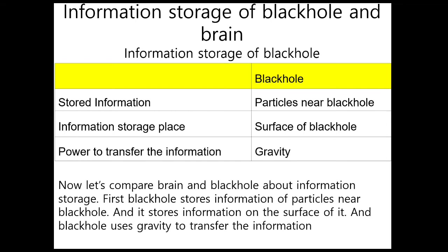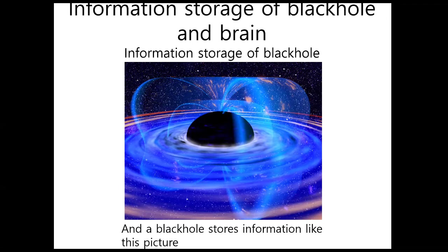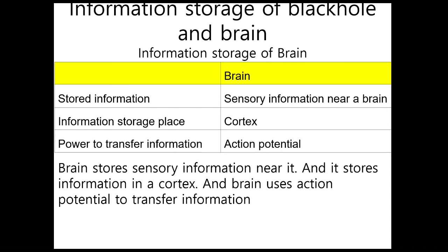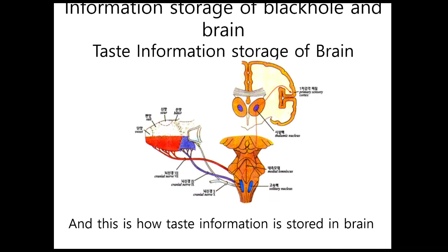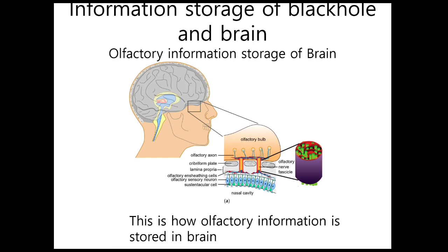Now let's compare brain and black hole in terms of information storage. A black hole stores information from particles near the black hole, and it stores information on the surface only a bit. The black hole uses gravity to transfer the information. The brain stores sensory information near it, and it stores information in the inner cortex. The brain uses action potential to transfer information. This is how visual, literary, taste, and olfactory information is stored in the brain.